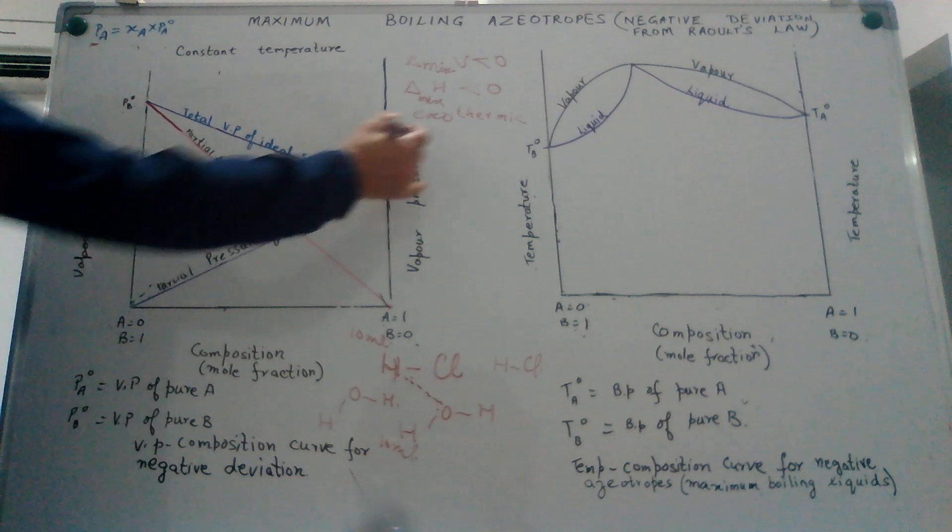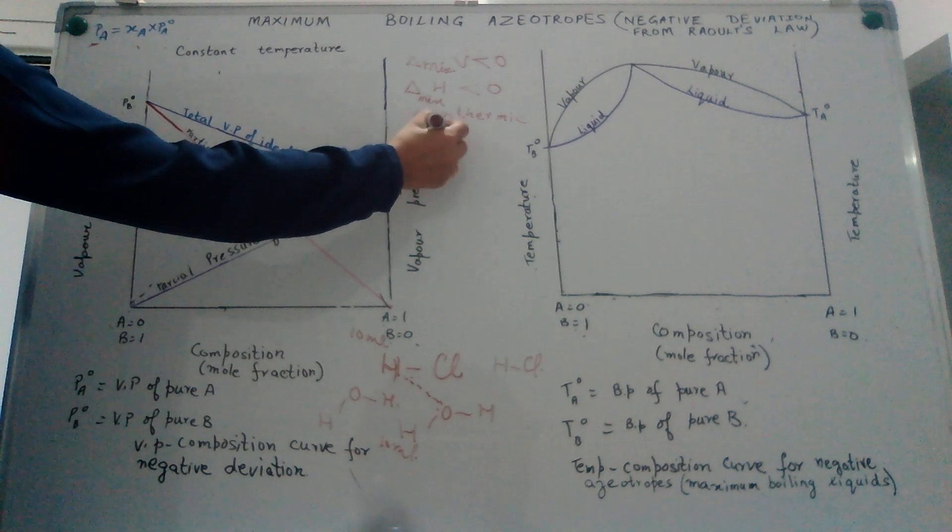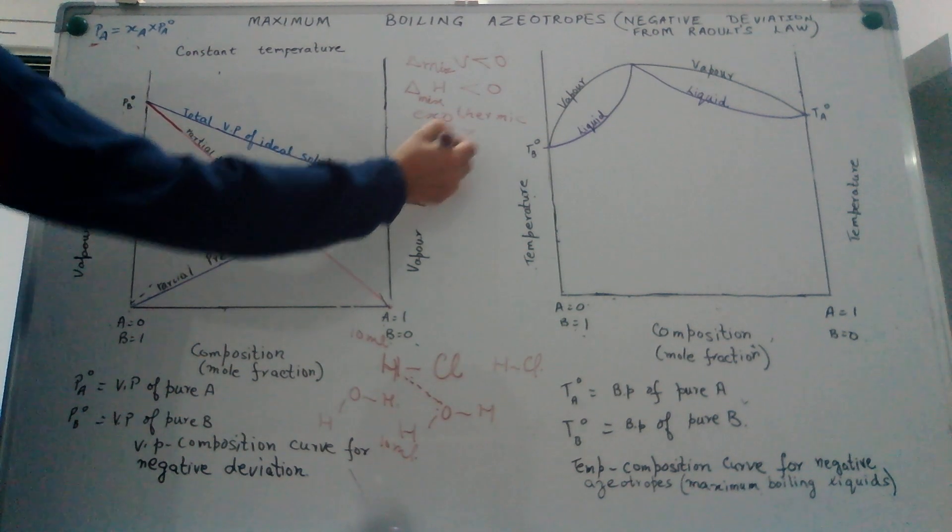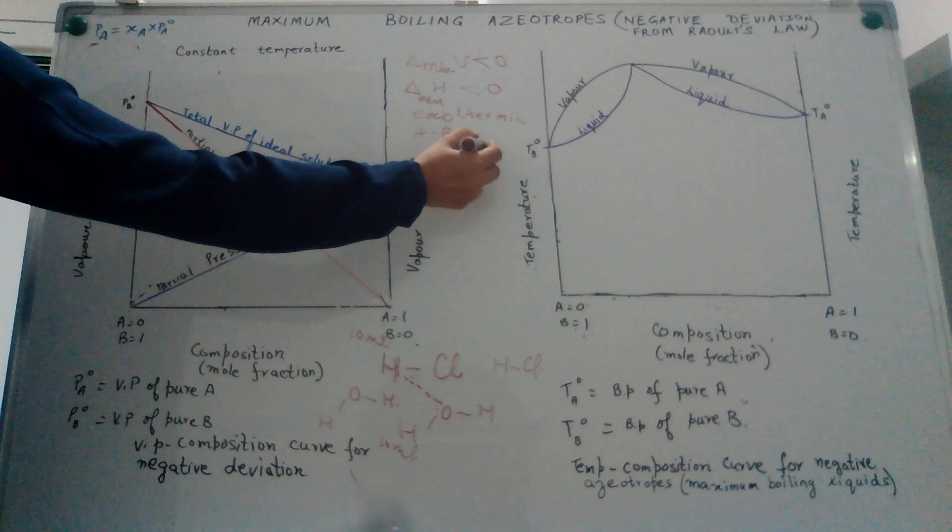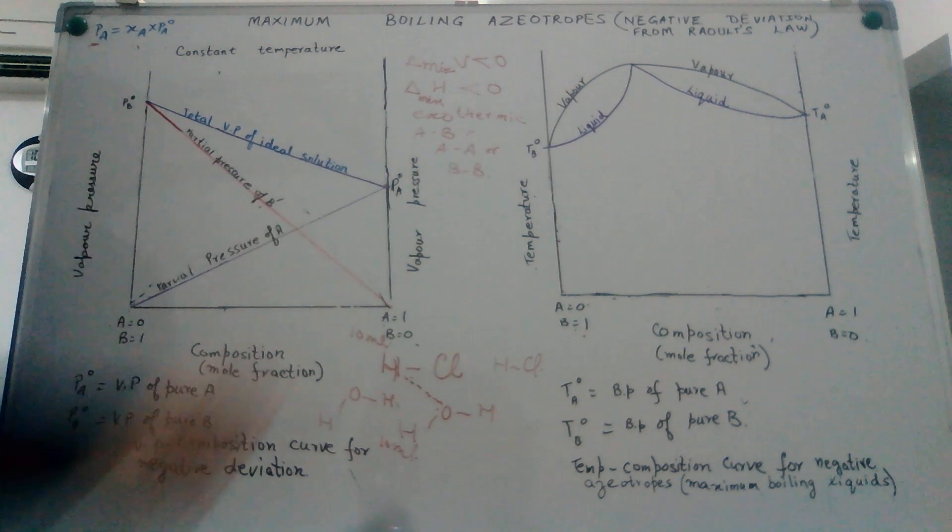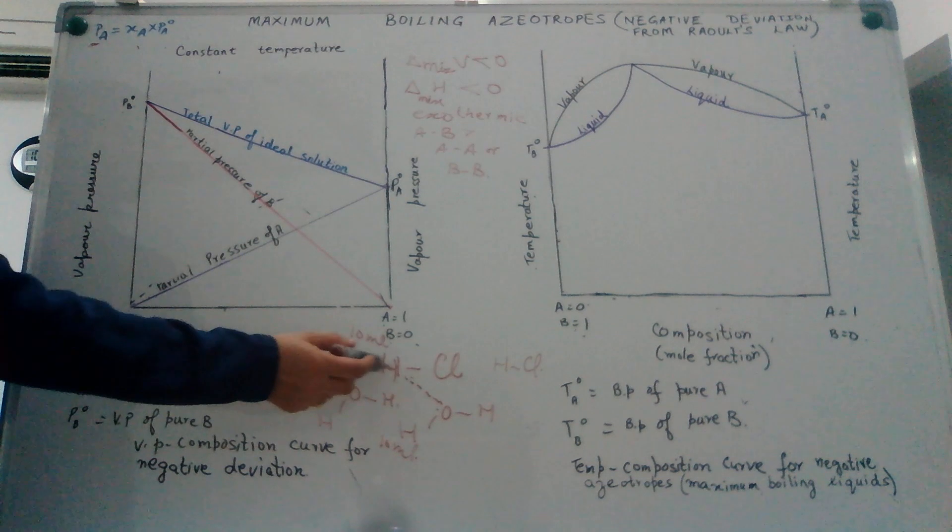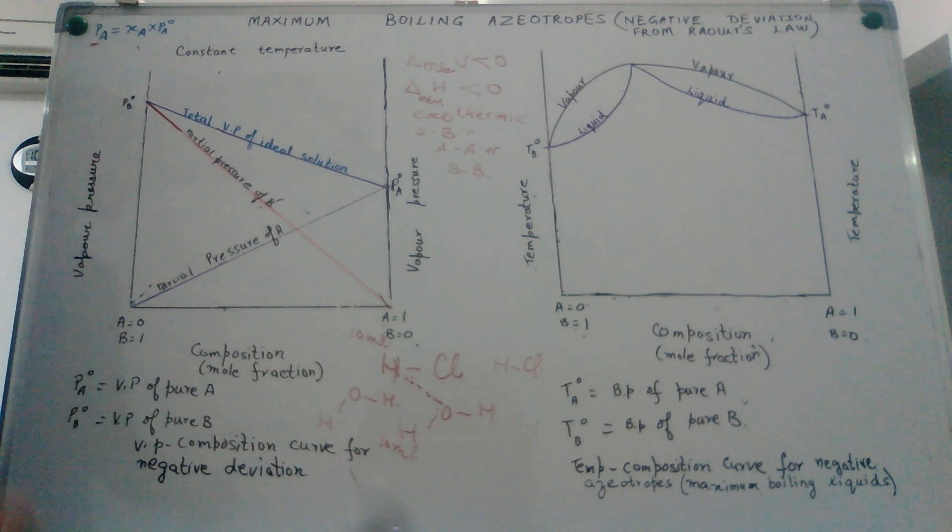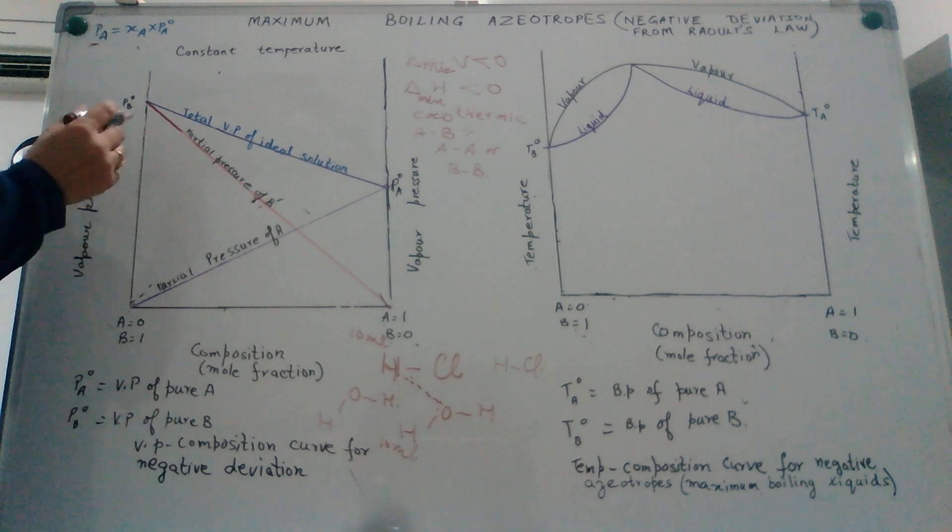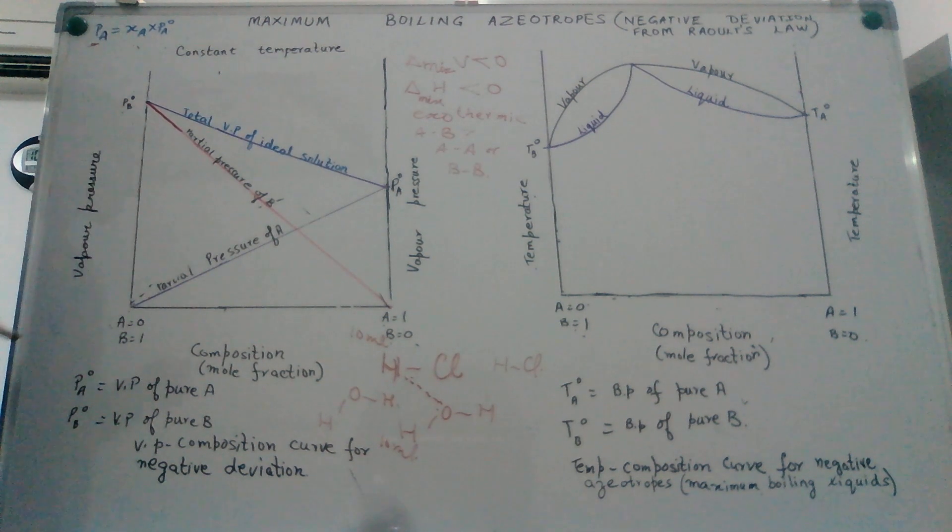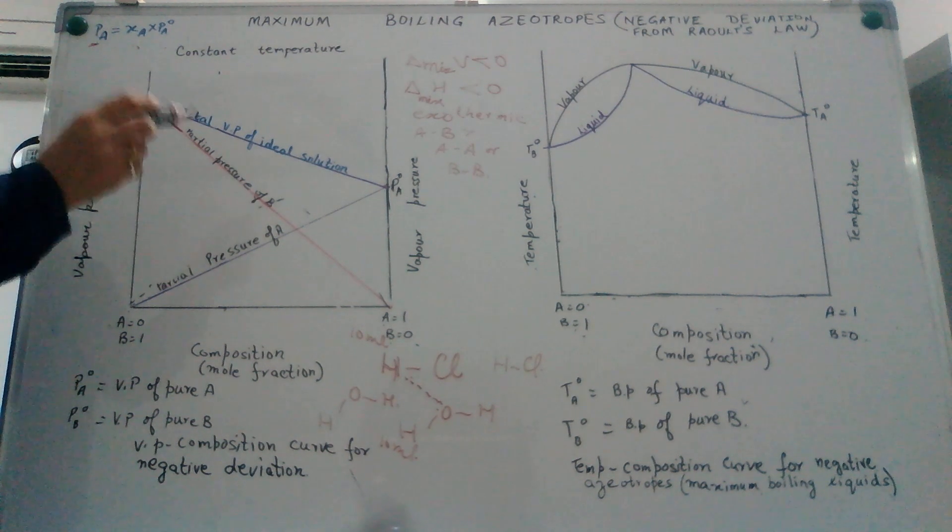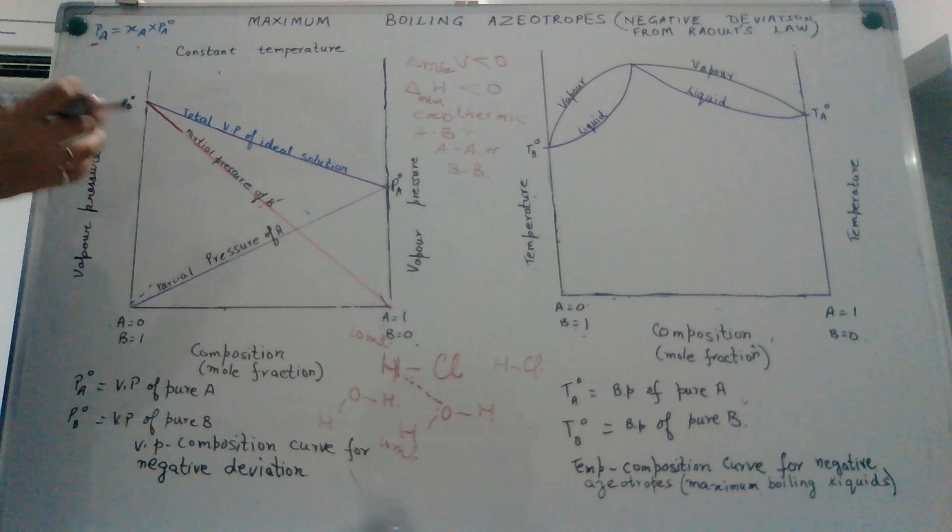To say it generally, the forces of attraction between AB molecules are greater than the forces of attraction between AA or BB molecules. In other words, the forces of attraction which develop between HCl and water are higher than those between two HCl molecules. What is the implication of this? This means that the escaping tendency of the molecules now actually decreases.